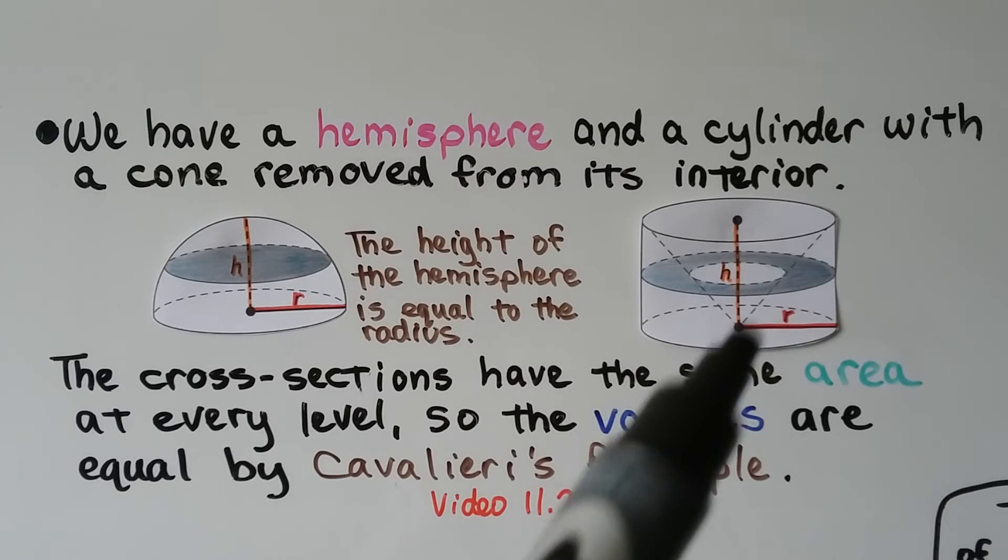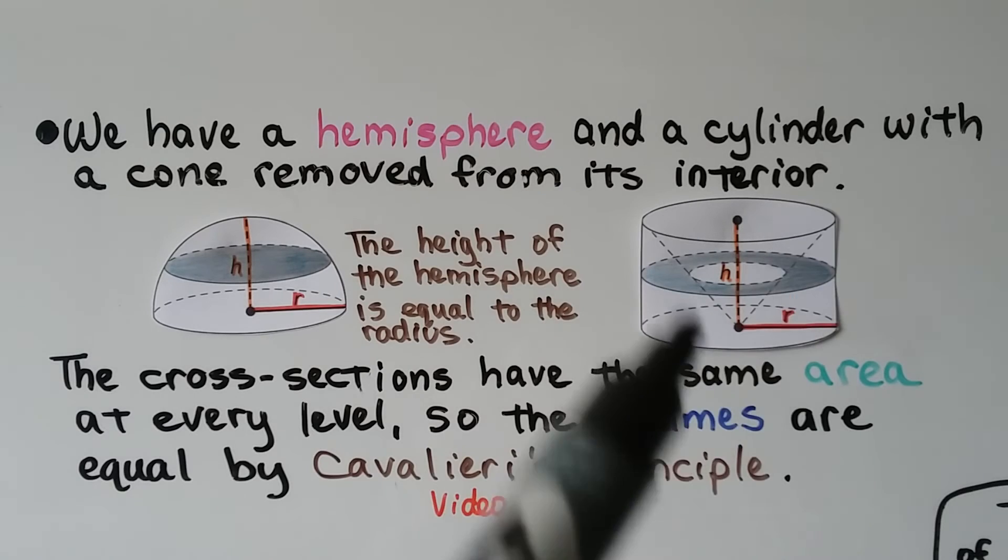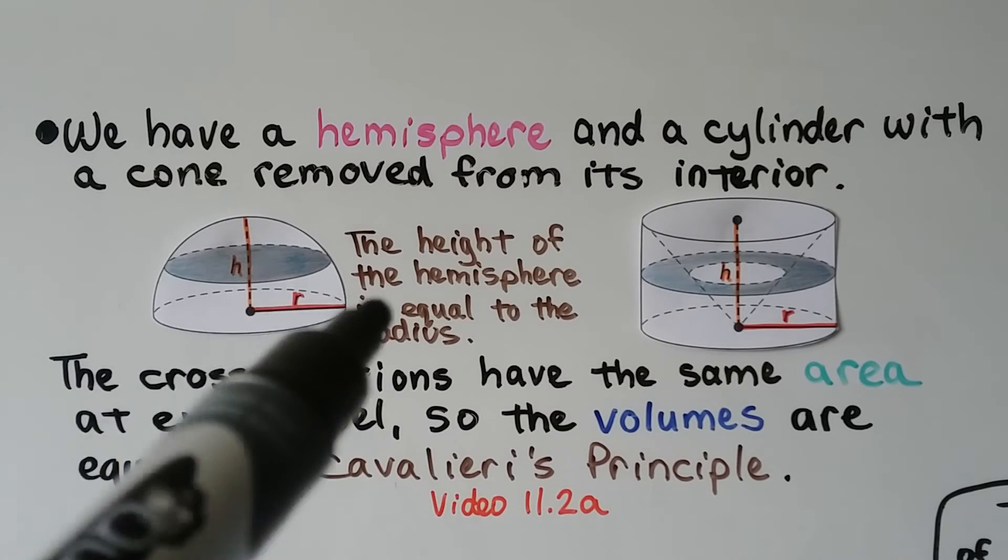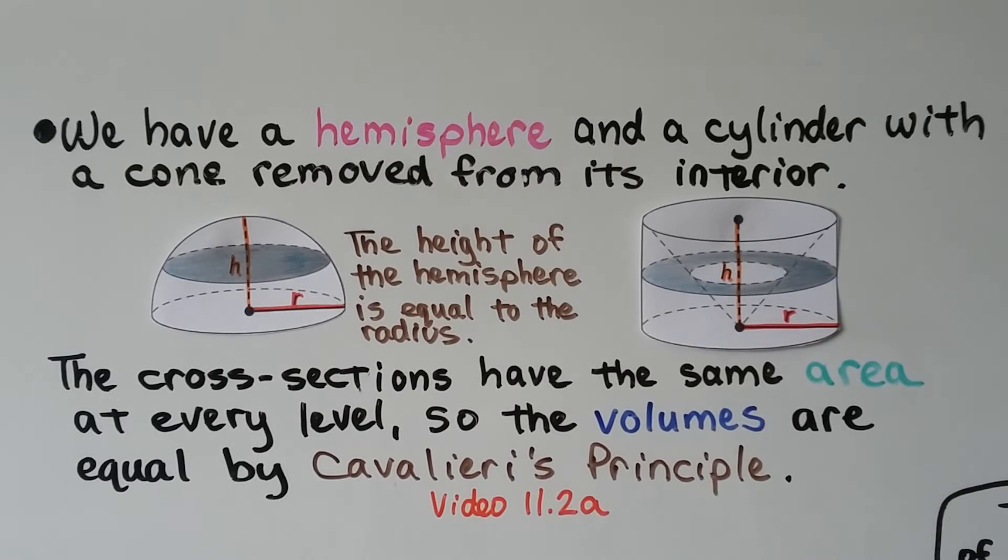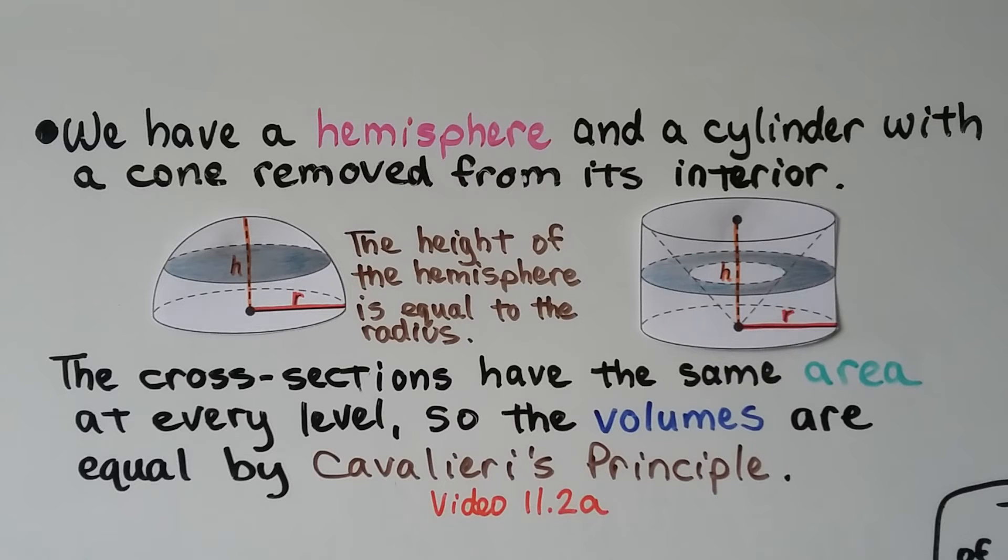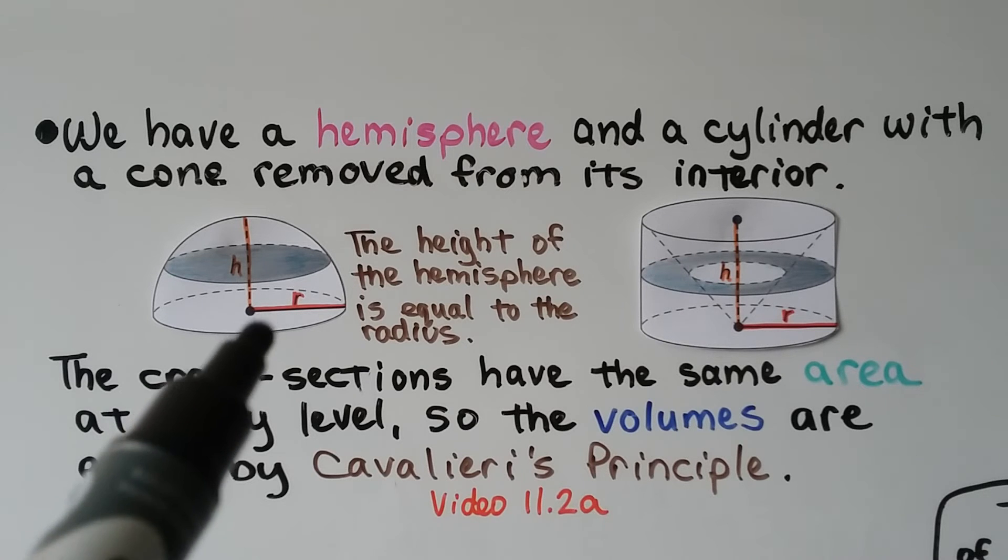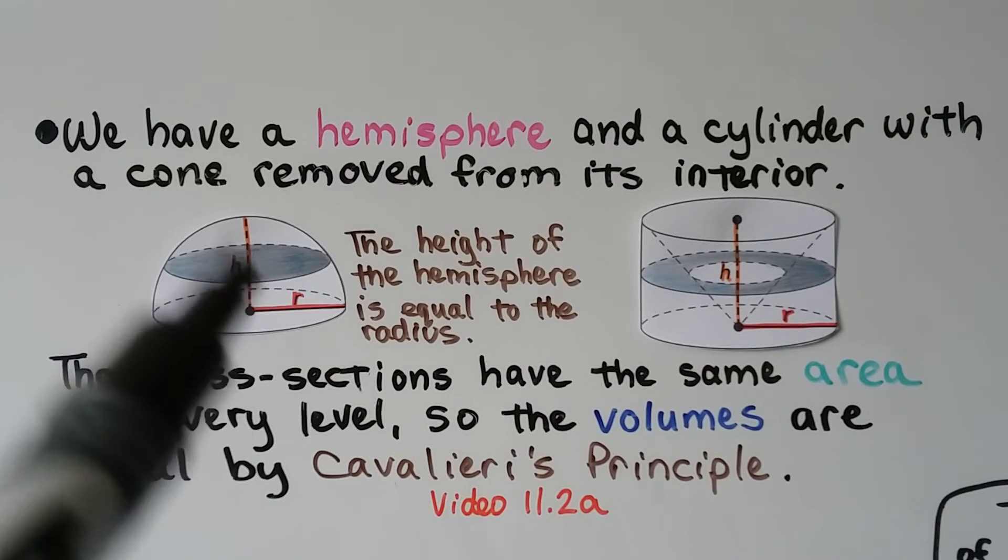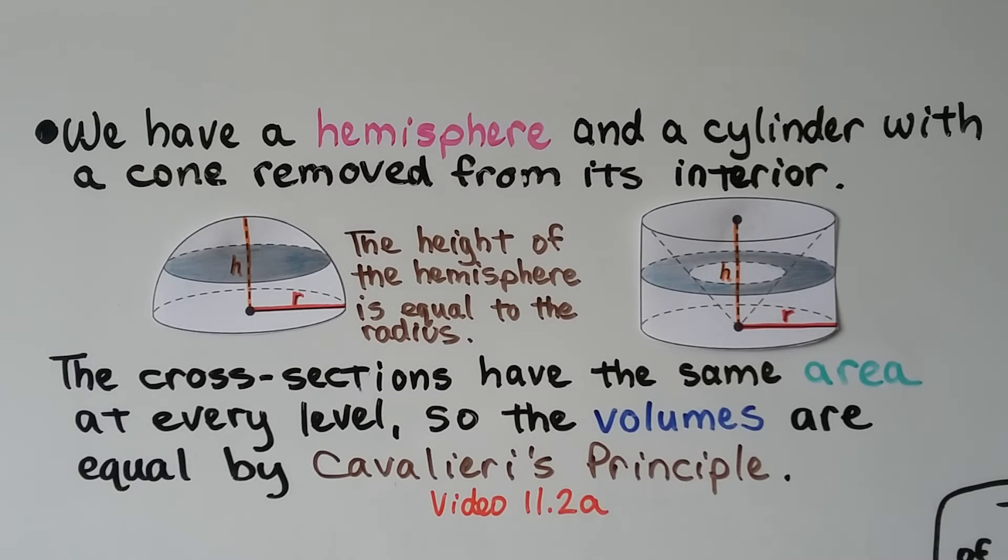Here we have a hemisphere and a cylinder with a cone removed from its interior. And the height of the hemisphere is equal to the radius. Because, remember, the radius of a sphere connects the center of the sphere to any point on the sphere. So, no matter what direction we go, it's going to be the radius. And the cross sections have the same area at every level. So, the volumes are equal by Cavalleri's principle. We learned about that in 11.2a.